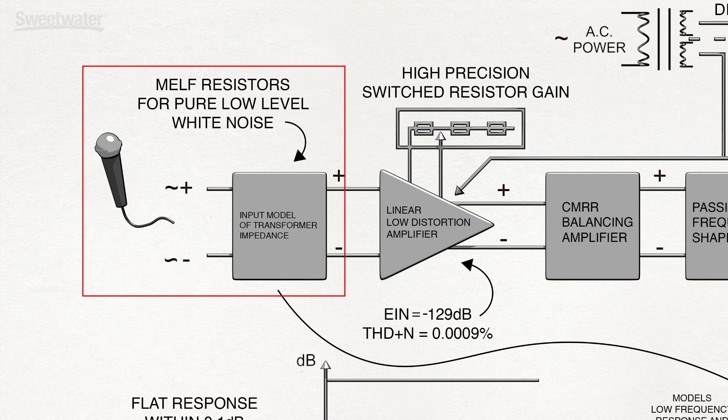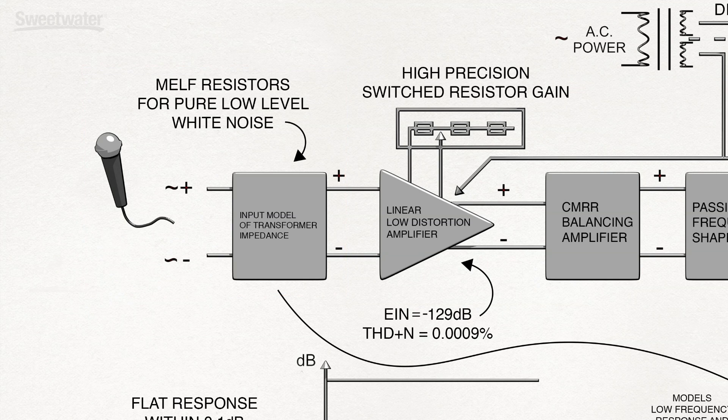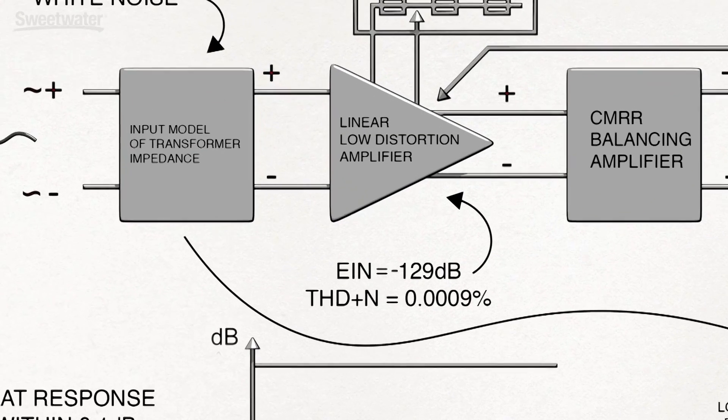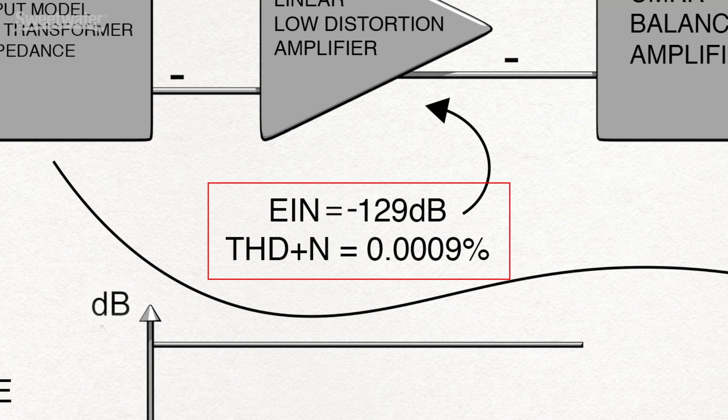Additionally, the resistor choice on the microphone input side was refined further with the use of MELF audiophile resistors, designed specifically to produce the lowest pure white noise of any resistor type. This combination of components and layout delivers an EIN of minus 129 dB, which is the very edge of what is possible in terms of a quiet Mic Pre design.